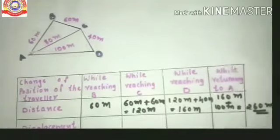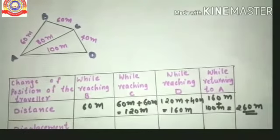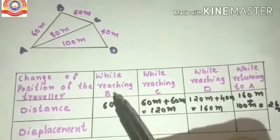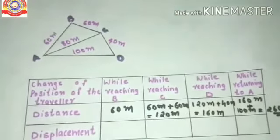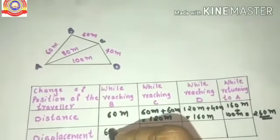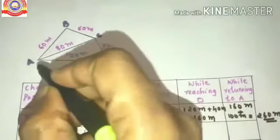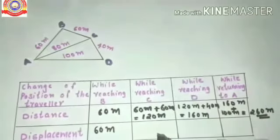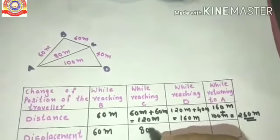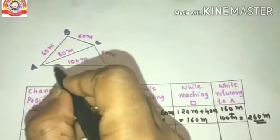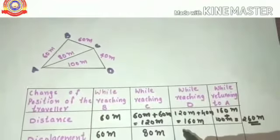Next we are going to find out the displacement while reaching B. From A to B, the displacement is 60 metres. Displacement is the straight line distance between the initial and final position. While reaching C, the displacement from A to C — the straight line distance — is 80 metres. While reaching D, from A to D, the straight line distance is 100 metres.